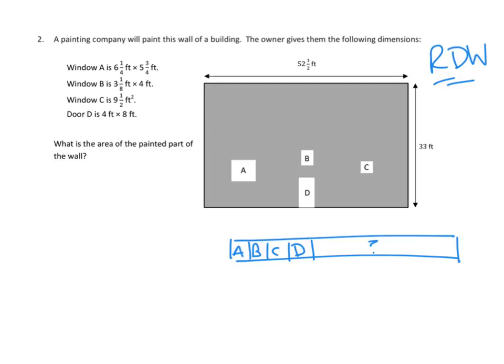That's really what their diagram shows too. We need to paint this whole wall, except we don't need to paint that, that, that, or that. So really, if you think about it as the whole wall minus A, minus B, minus C, minus D, then you have all this gray space in between. So let's set up a math sentence that would work. I am not going to solve the whole problem for you, but let's set up a math sentence.